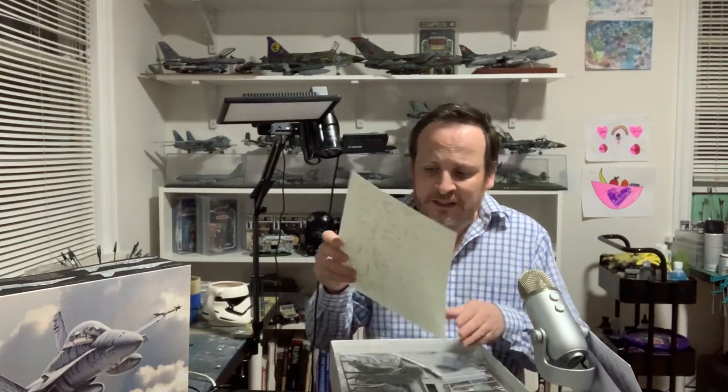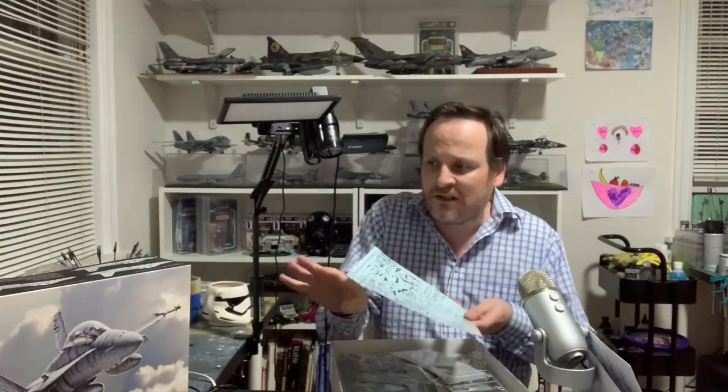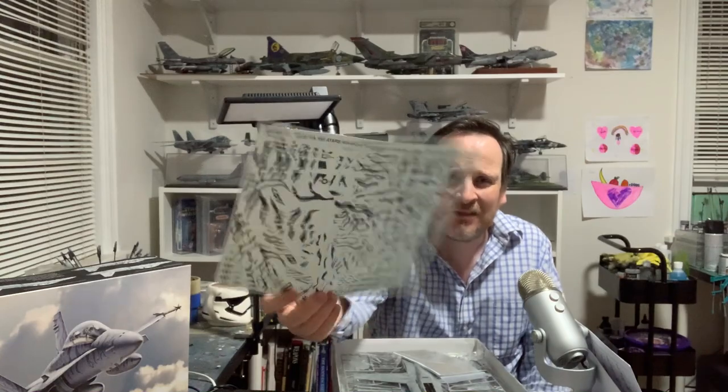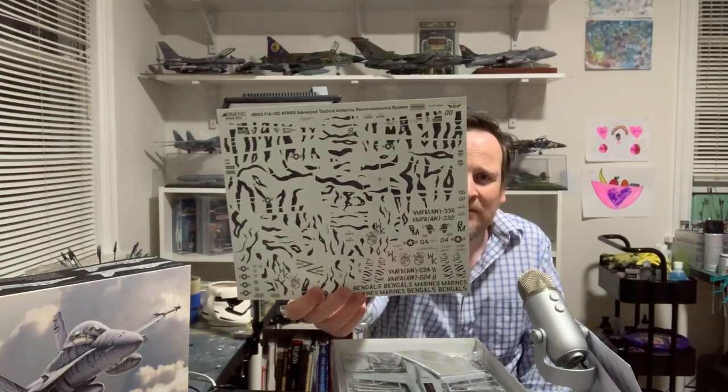If we go for the box real quick, we're going to do it in the Bengal Tiger markings, and this is a decal sheet, so it's all decals. Now, if you wanted to, you could get a mask set and paint these, but I think the decals are fine. It's got a giant sheet there, and we've got the mask set.